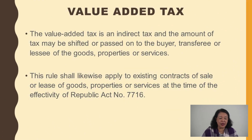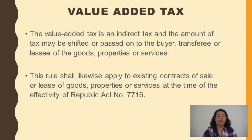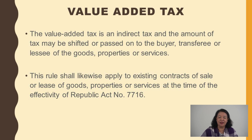The value-added tax is an indirect tax — the amount of tax may be shifted or passed on to the buyer, transferee, or lessee. The seller, who should be paying, does not bear it personally because it is passed on. This caused confusion under Republic Act 7716 because it stated that VAT would apply to existing contracts of sale or lease of goods.